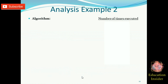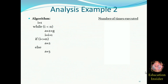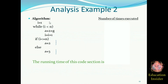Let's move to another example — analysis example number two. Here is another example of line-by-line analysis of an algorithm. We are again given an algorithm and we are supposed to find out the running time of this piece of code. Let's start by analyzing the first line, which is simply an assignment statement, so it will take just one constant time for its execution.